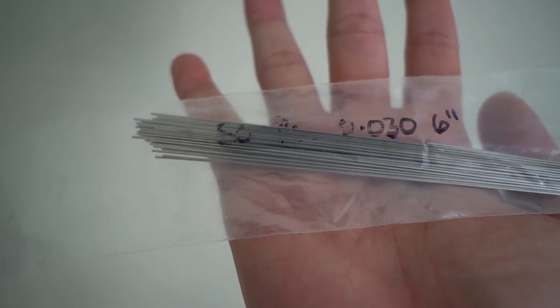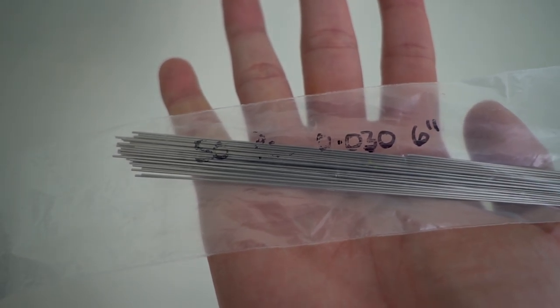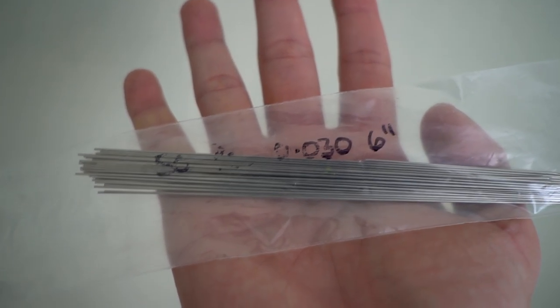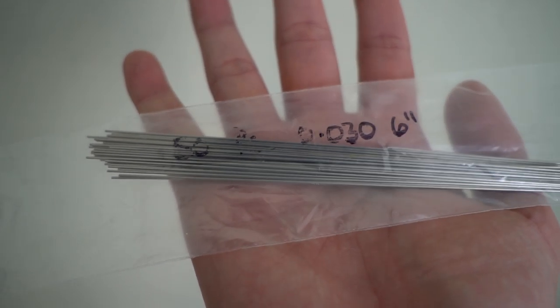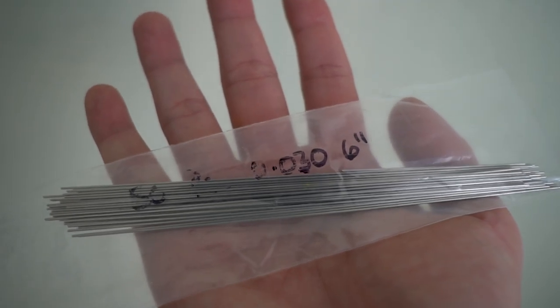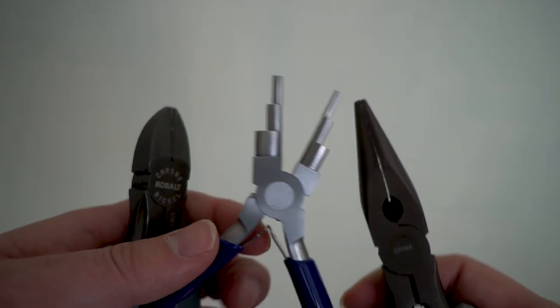You need stainless steel wire - I have 0.03 inches diameter at 6 inch length. You wouldn't need the whole 6 inches but more the merrier. Then your assorted different pliers - I have wire bending pliers, needle nose pliers, and wire cutters.